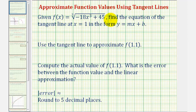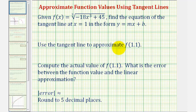We're given a function f of x, asked to find the equation of the tangent line at x equals one in slope-intercept form. Then we're going to use the tangent line to make an approximation for f of 1.1. Then we'll calculate the actual value of f of 1.1 using the given function, then determine the error between the true function value and the linear approximation.